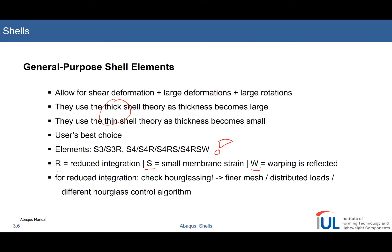If you go for reduced integration, you always have to check for hourglassing. Hourglassing is a problem where two elements deform such that — with only one integration point in the center — the deformation mode has zero strains. We will discuss this in more detail when we cover solid elements. If you see such a weird deformation pattern, you should refine your mesh, distribute your loads, or use a different hourglass control algorithm.